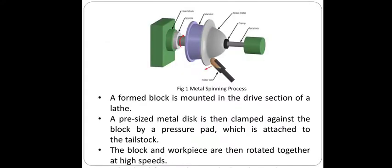In the metal spinning process, a form block (mandrel) is mounted in the drive section of a lathe. A precise sheet metal disc is then clamped against the block by a pressure pad attached to the tailstock, as shown in the figure.